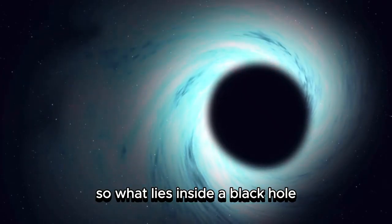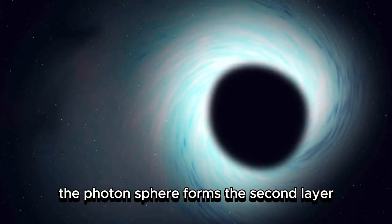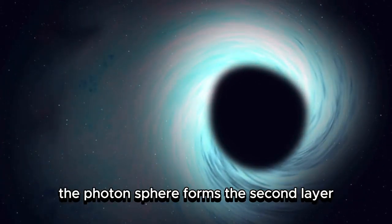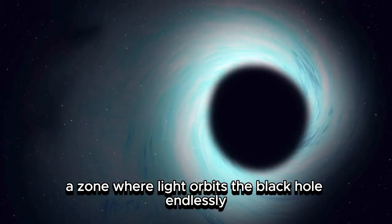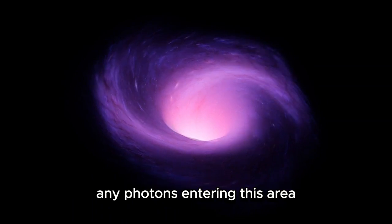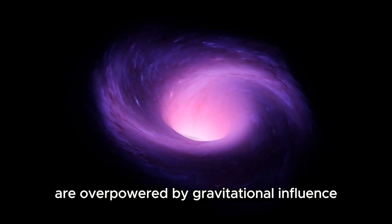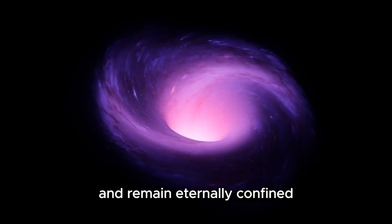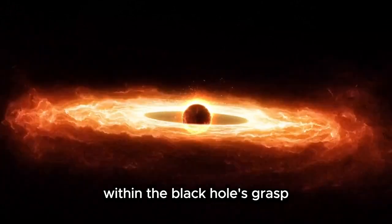So, what lies inside a black hole? Progressing inward, the photon sphere forms the second layer, a zone where light orbits the black hole endlessly. Any photons entering this area are overpowered by gravitational influence and remain eternally confined within the black hole's grasp.